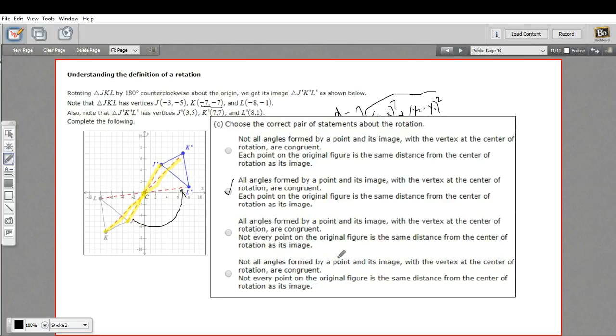The rest of these are just different combinations. This one's saying all the angles are congruent, which is true, but not every point. It doesn't cut these points in half at the center. And this one says they're not congruent and they're not cut in half. So that is a little bit of work with understanding the definition of rotation.